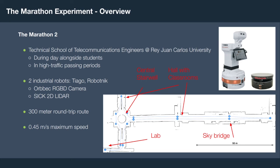The Marathon experiments we conducted are an extension of experiments conducted at Willow Garage for the ROS1 navigation stack. We conducted these in a large university building during daytime with students and in high-traffic passing periods. We used two different industrial robots: the PAL Robotics Tiago and the Robotnik RB1 base, each outfitted with an RGBD camera and a 2D SICK LiDAR. We navigated through a central stairwell, across a hallway with classrooms, a sky bridge, and back into a laboratory — in both static and dynamic environments. The route is about 300 meters and the maximum speed was set to 0.45 meters per second.